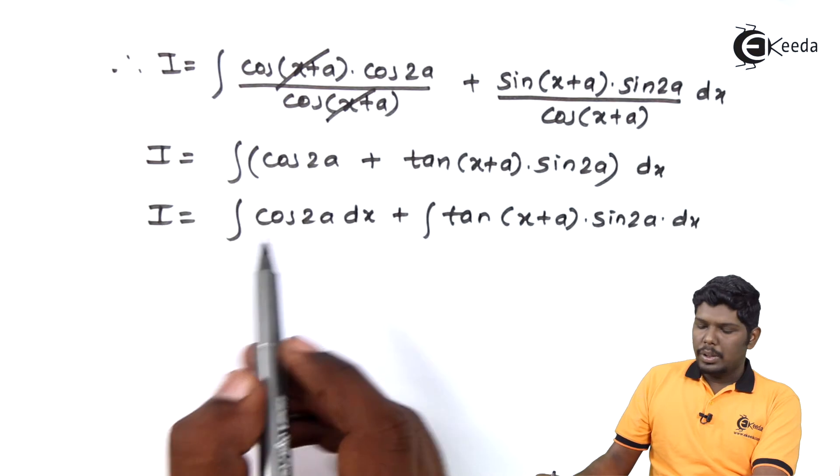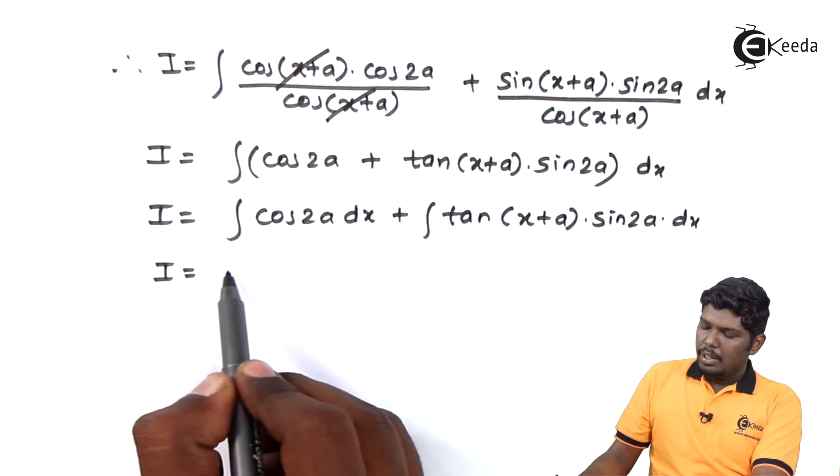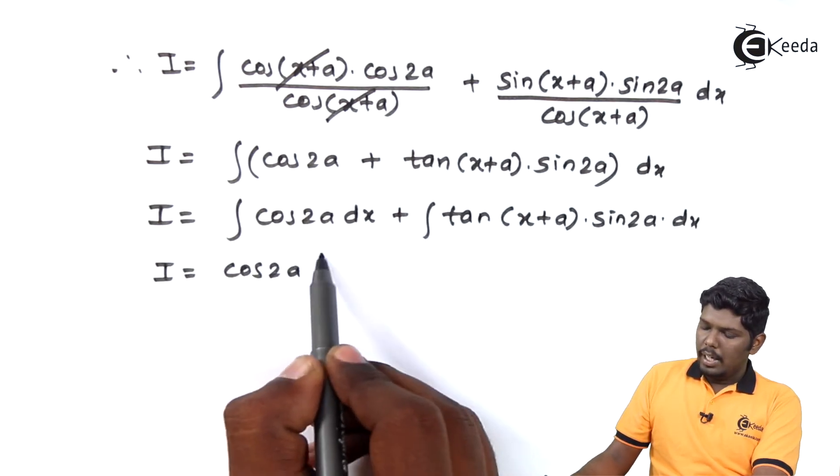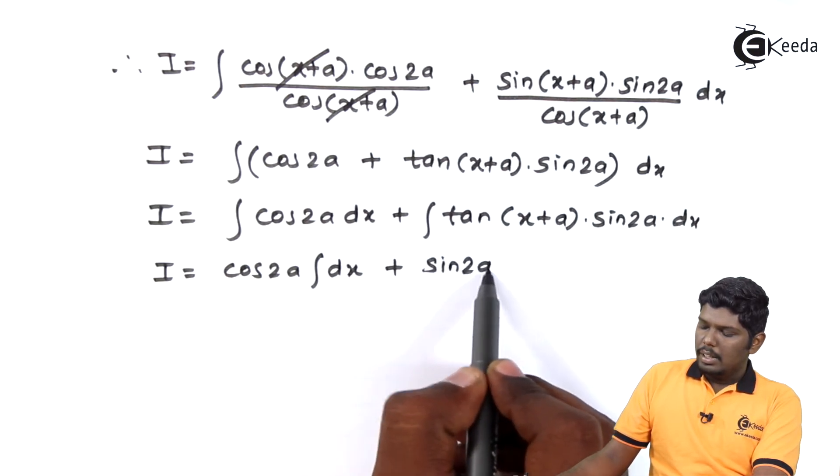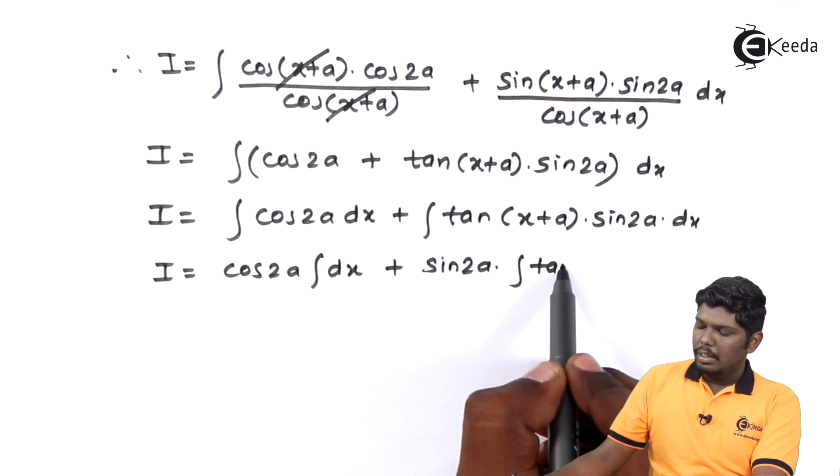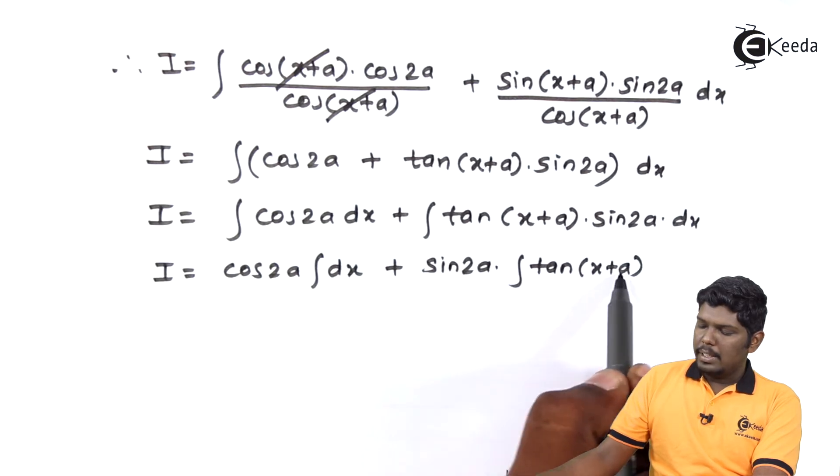Taking constant part outside, we have cos 2a integral dx plus sin 2a integral tan of x plus a dx.